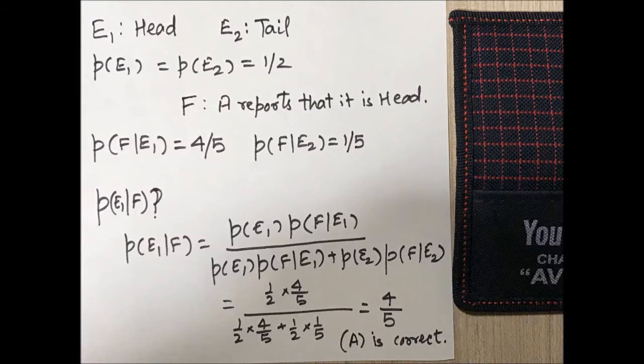Now E1 is a head and E2 is tail, so they become mutually exclusive and exhaustive events and they are equally likely to come. So clearly P(E1) is equal to P(E2) equals 1/2.